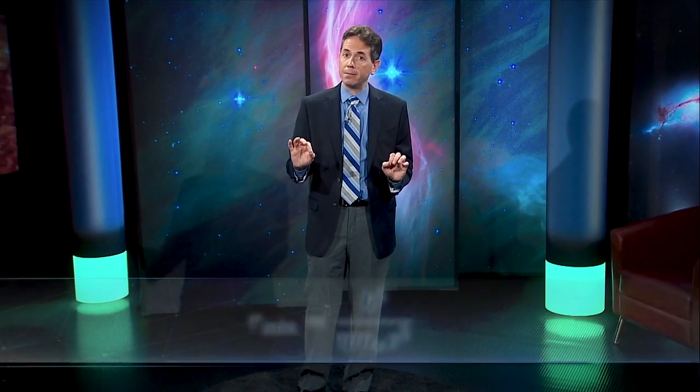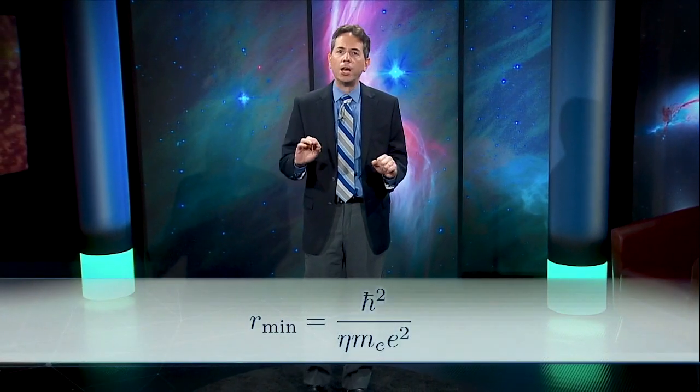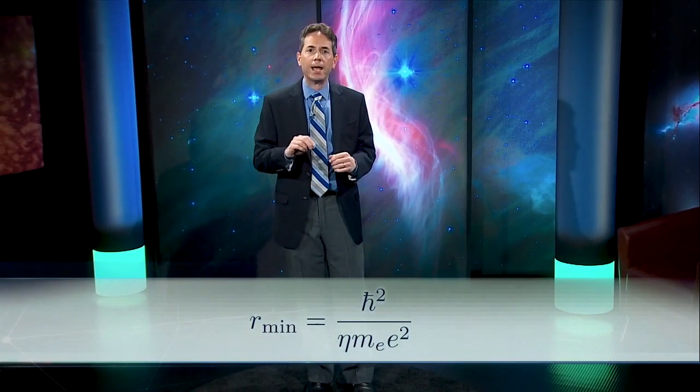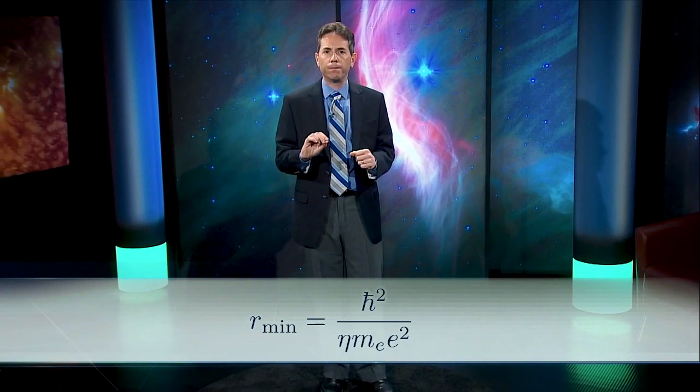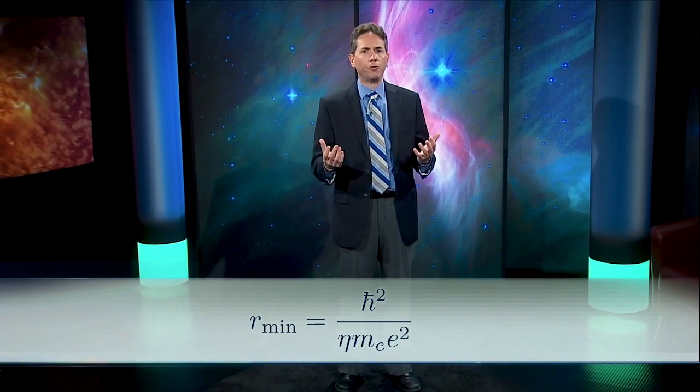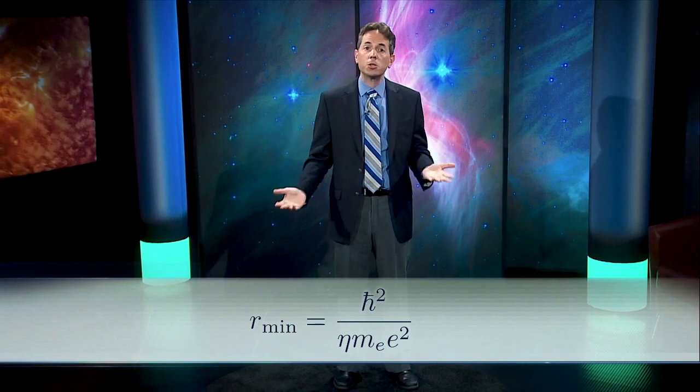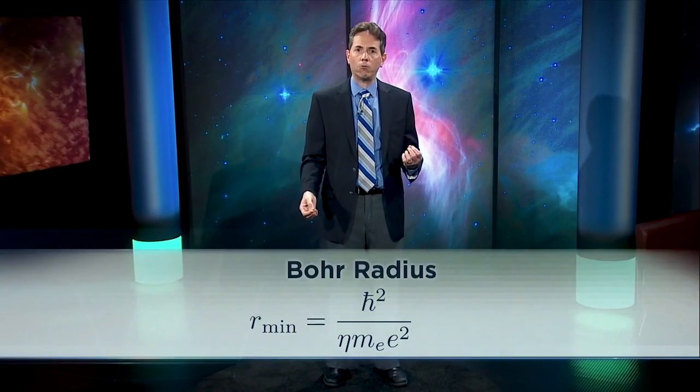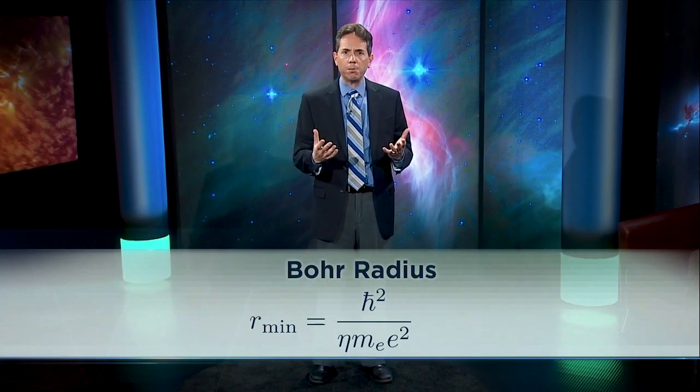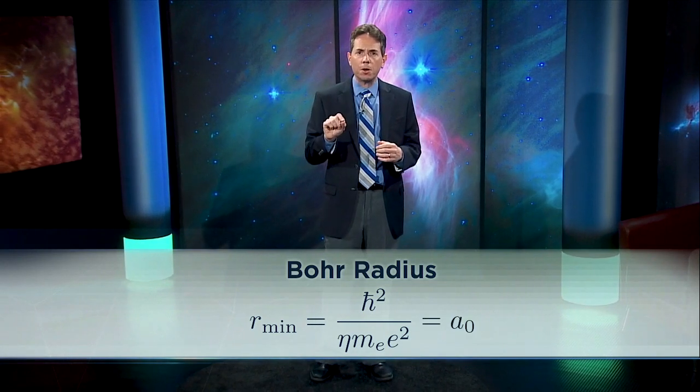Those of you who know calculus can also locate the minimum through a direct calculation. You take the derivative of the energy with respect to r and set it equal to zero. You'll find that at the minimum, r equals h-bar squared over eta m e squared. That combination of constants comes up so often in atomic physics. We give it a special name, the Bohr radius, and a special symbol. It's an a with a subscript of zero, a-naught.